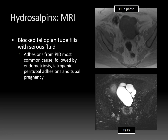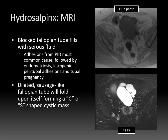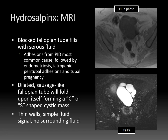Hydrosalpinx is when a blocked fallopian tube fills with serous fluid. Adhesions from pelvic inflammatory disease are the most common cause, followed by endometriosis, iatrogenic peritubal adhesions from procedures, and tubal pregnancy causing scarring. A dilated sausage-like fallopian tube will fold upon itself, forming that classic C or S-shaped cystic mass, pointing to a dilated tube rather than a cystic ovarian neoplasm. Unlike tubovarian abscess and pyosalpinx, hydrosalpinx will have thin walls, simple fluid signal without heterogeneity, and no significant surrounding inflammatory fluid. T2 fat-suppressed images are a great way to look for inflammatory fluid.